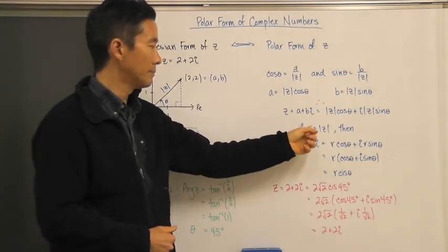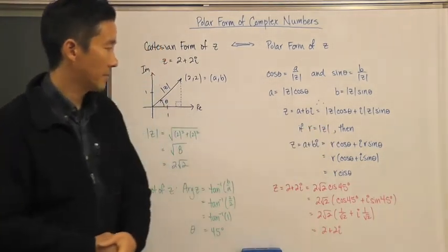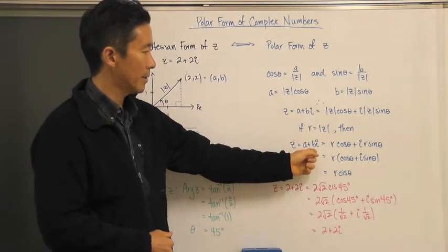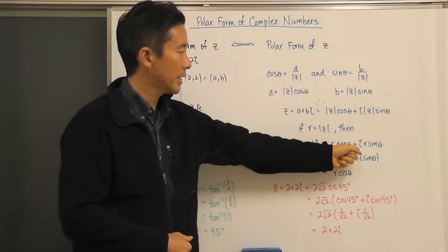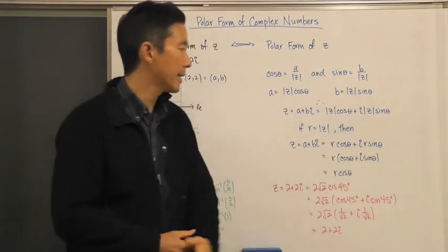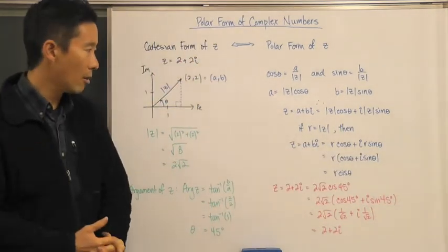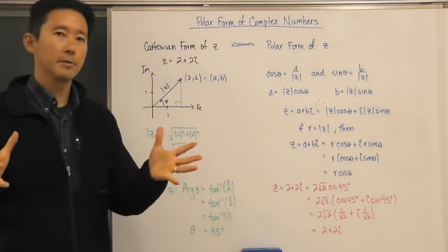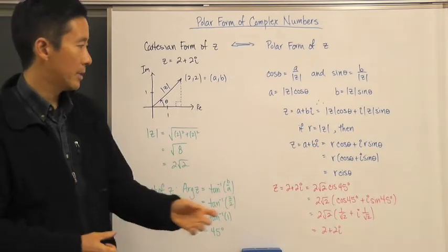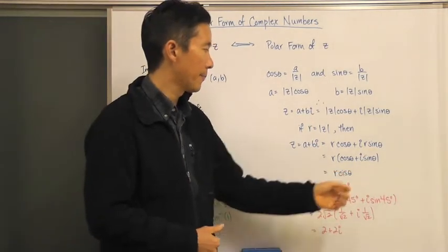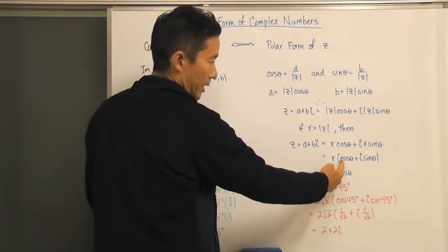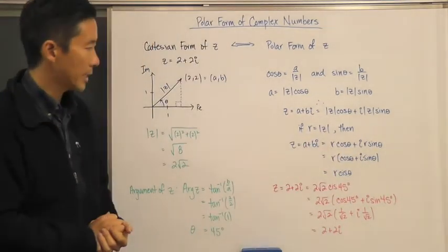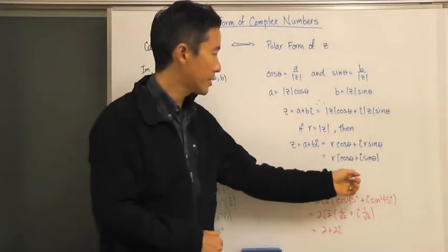This gives us the modulus of Z times cosine theta plus i times the modulus of Z times sine theta. If we associate R as the modulus of Z, then any complex number can be written as R cosine theta plus iR sine theta, and factoring out R gives us R times the quantity cosine theta plus i sine theta. We abbreviate this as R·cis(theta), where cis(theta) stands for cosine theta plus i sine theta. This is the polar form of any complex number.